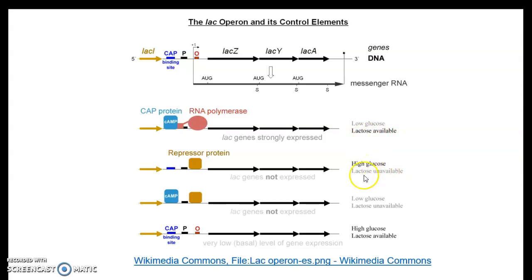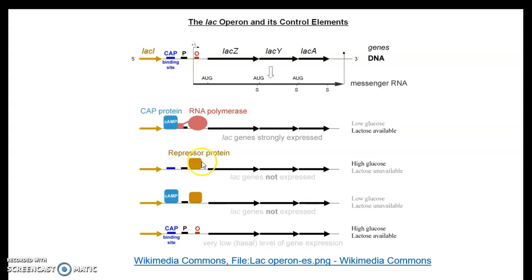When glucose is present at high concentration and lactose is unavailable, the lac operon is switched off. High glucose leads to low cyclic AMP; without cyclic AMP, the catabolite activator protein cannot bind its site and cannot stabilize RNA polymerase. Additionally, since lactose is absent, no allolactose is produced to relieve the repressor from the operator region. The repressor remains strictly bound to the operator, and RNA polymerase cannot bind — this represents negative regulation with no gene expression.